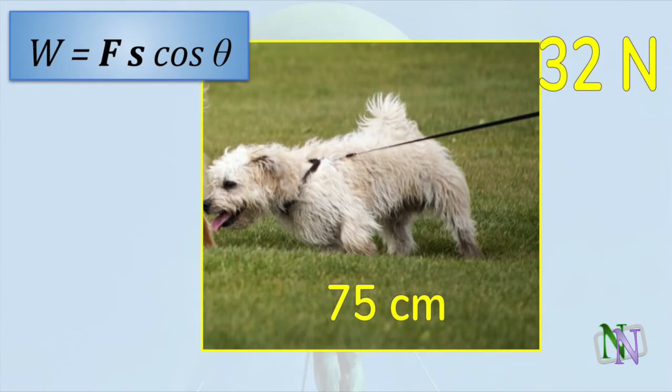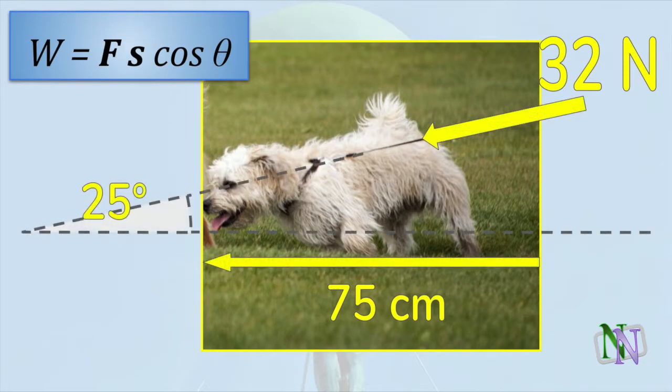This dog pulls his owner 75 cm to the left and does work using a force of 32 newtons in the leash. The work done is calculated using the formula W equals F S cosine theta. The force and the displacement are not parallel, and only the horizontal component of the force parallel to the displacement is doing work. The component is adjacent to the angle of 25 degrees, and so we are right to be using cosine. The vertical component acts at right angles to the displacement, and so does no work. Its effect is to pull downwards on the owner's hand, but no work is done in the vertical direction.